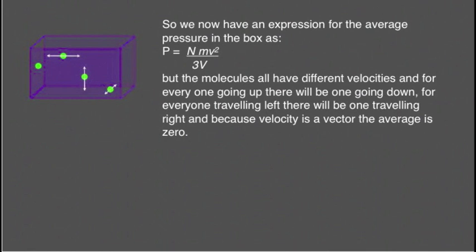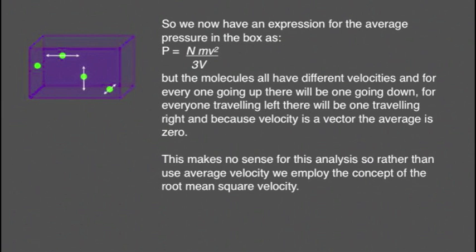For every one moving sideways, there'll be one moving in the opposite direction and so on. The average velocity would be zero. It would make absolutely no sense to substitute a value of zero in this equation.